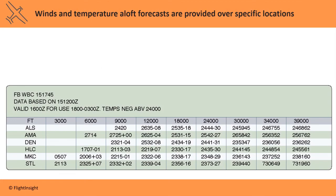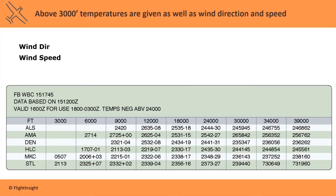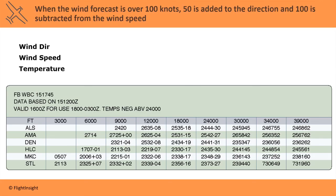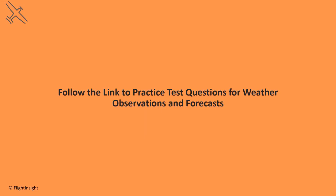Winds and temperature aloft forecasts are also given out to aid in navigation and flight planning. They're provided over specific locations such as VOR stations. Here's a report for the MKC VOR near Kansas City. At 3000 feet, the wind direction and speed are given — this is 050 degrees at 7 knots. Above 3000 feet, temperatures are also included. Notice that at 30,000 feet, the minus sign is dropped, as it's assumed that all temperatures are below 0 Celsius up there. When the wind is very strong — over 100 knots — 50 is added to the two-digit wind direction code, and 100 is subtracted from the wind speed. So here we have winds out of 230 degrees at 106 knots with a minus 49 degree temperature. They do it this way because they only have room for that many characters in each string of the winds aloft report.